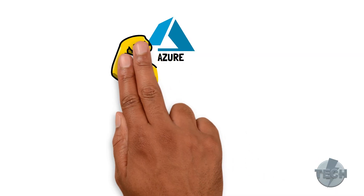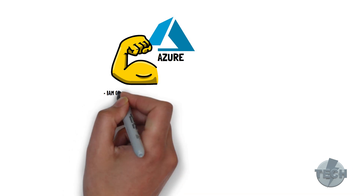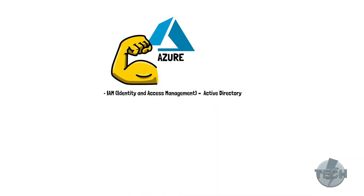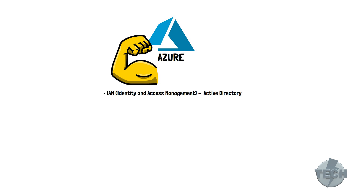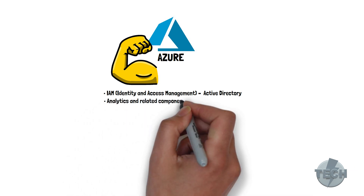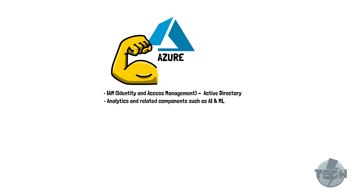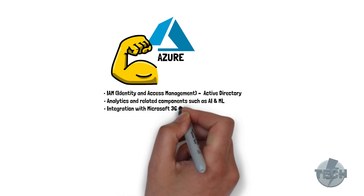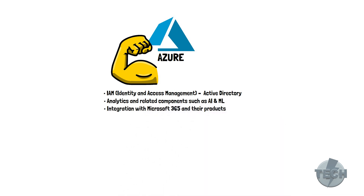You need to leverage the strength of the specific cloud providers. A few key areas which Azure excels in are IAM, Identity and Access Management, specifically the integration with the on-premise Active Directory. Analytics and related components such as AI and ML, Artificial Intelligence and Machine Learning. Integration with Office 365, also known as Microsoft 365, and their products.